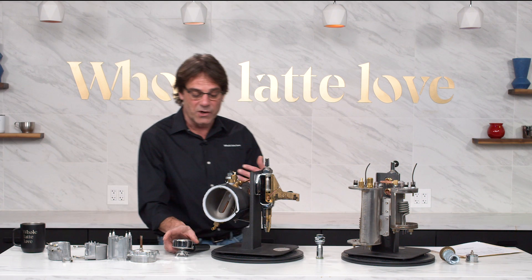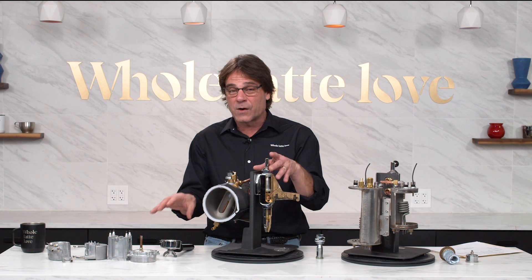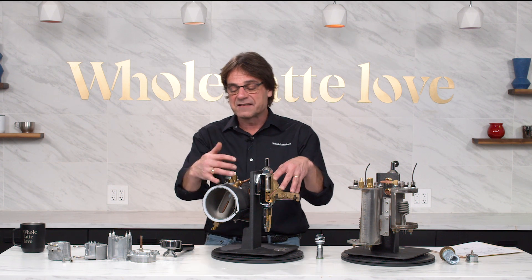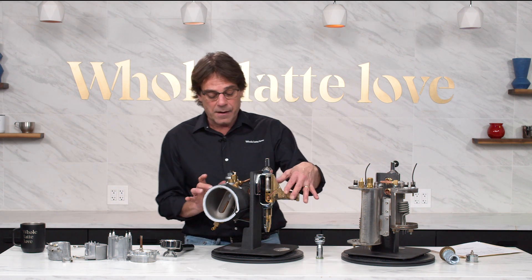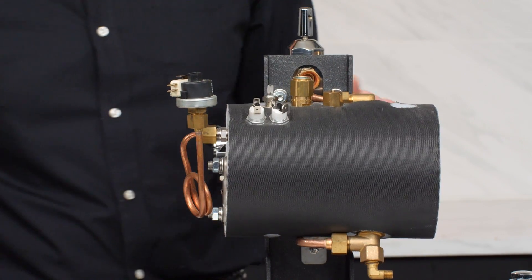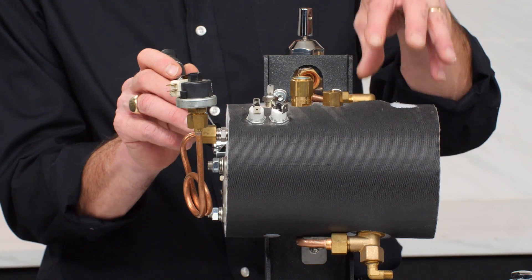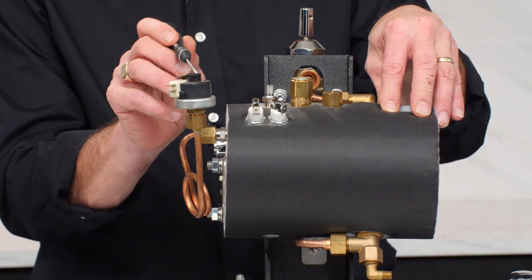Now let's move up to a heat exchange boiler. On the single boiler we had thermostats on the outside of the boiler. This is a heat exchange boiler. This one is going to use a pressure stat. I'm going to turn the machine here so you can see the pressure stat.